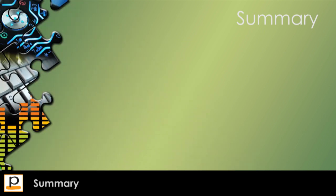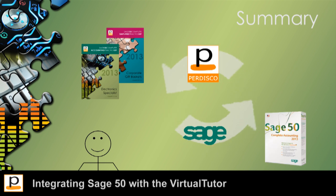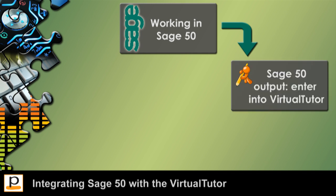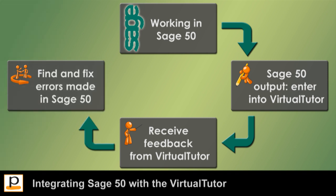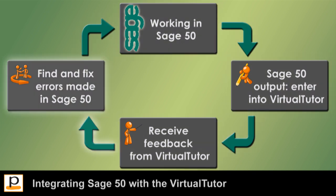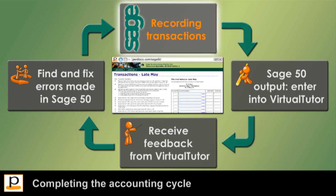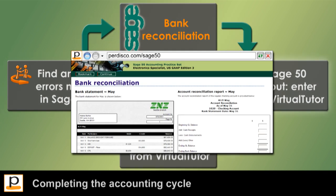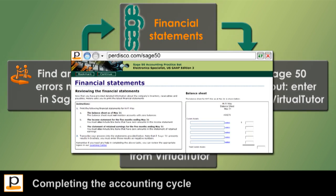To summarise what you've just seen, students complete each part of their practice set in a process that integrates their use of Sage50 with Pedisco's virtual tutor technology: working in Sage50, generating Sage50 output and entering it into the virtual tutor, receiving performance feedback from the virtual tutor, and finding and fixing errors made within Sage50. Students then apply this process to each of the remaining parts of the practice set to complete the accounting cycle by recording further transactions for May and generating different trial balance reports, performing a bank reconciliation, recording adjusting entries and generating an adjusted trial balance, and generating financial statements.